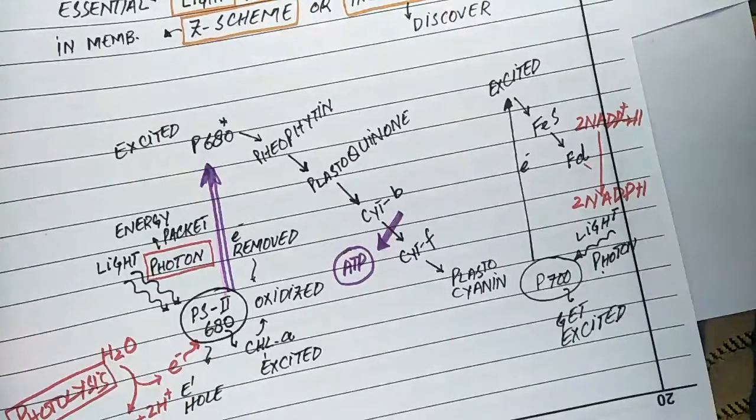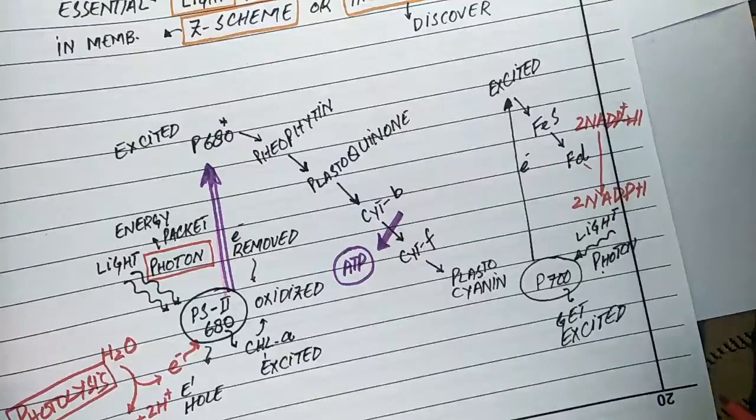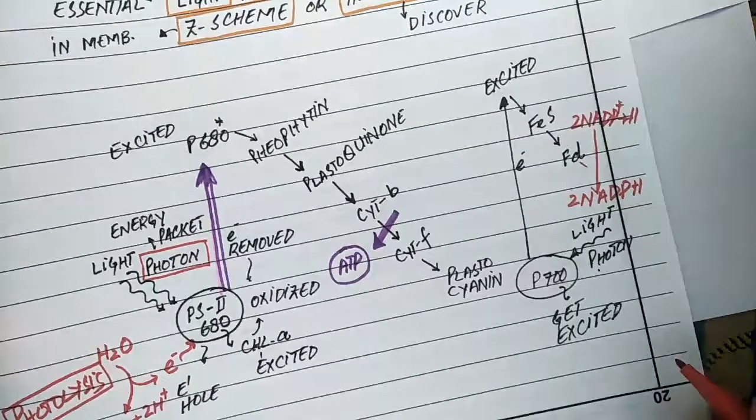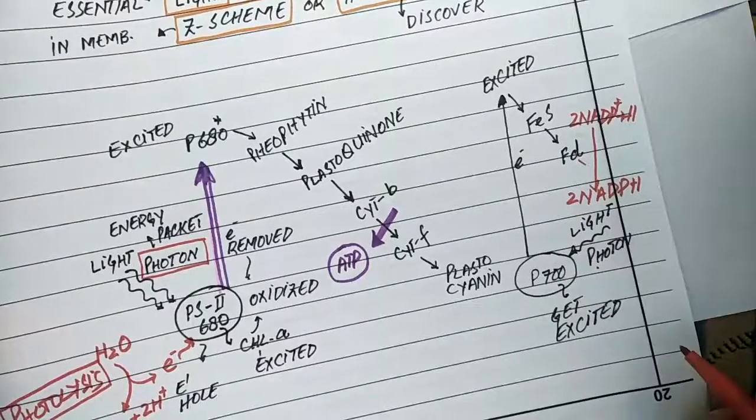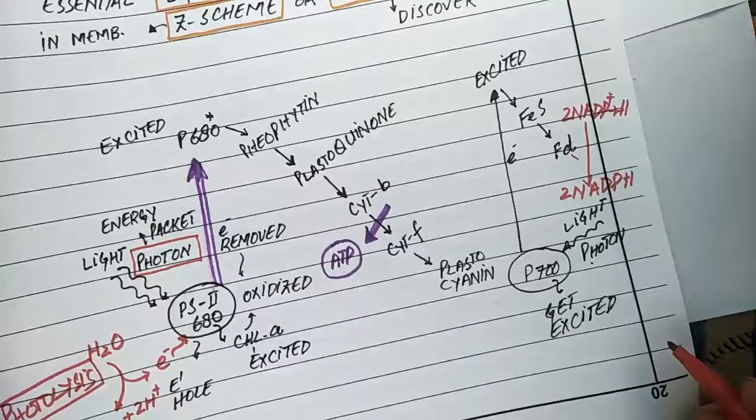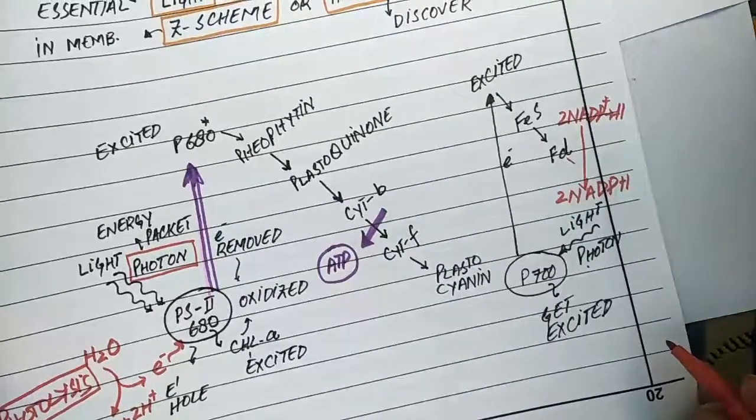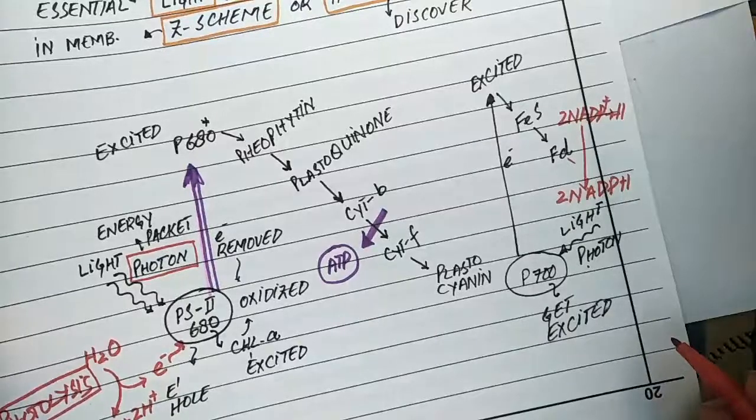In this whole process, electrons from water are removed and transferred to NADP. Because the electrons move from water in a straight path to NADP, this electron flow is known as non-cyclic electron flow.